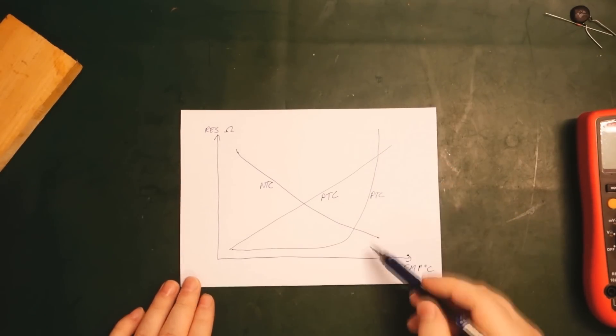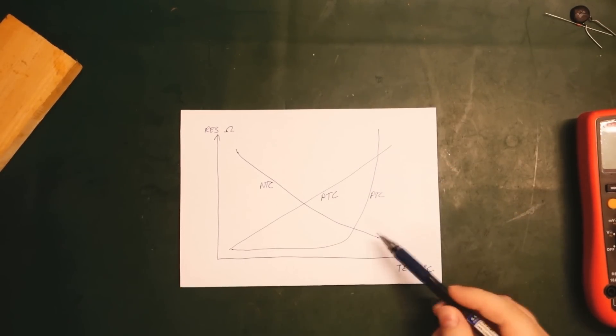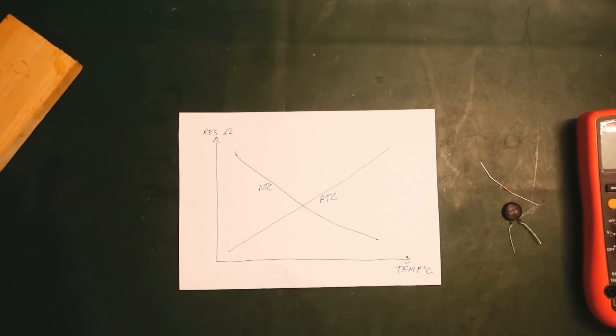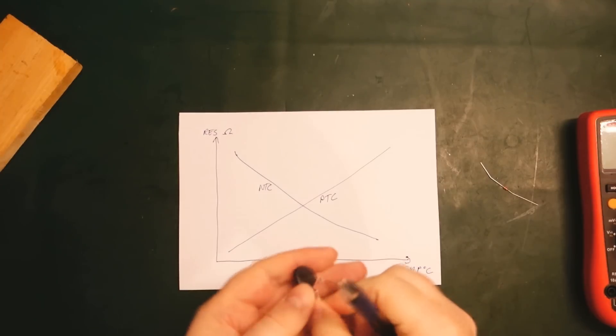Then you will have a sharp rise at a certain temperature, so you know that the current is going to be limited and it's going to protect whatever input or output you're using this PTC for.